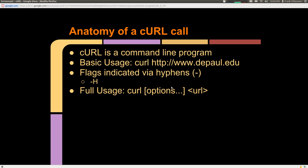So what is the basic structure of a curl call? Curl is a command line program. Its basic usage is the program name — curl — followed by the URL, for example HTTP www.depaul.edu. Flags, or switches as some people call them, are indicated via hyphens. Since curl has Linux roots it uses dashes. So the full basic usage is: curl, any options you need, and the URL last.